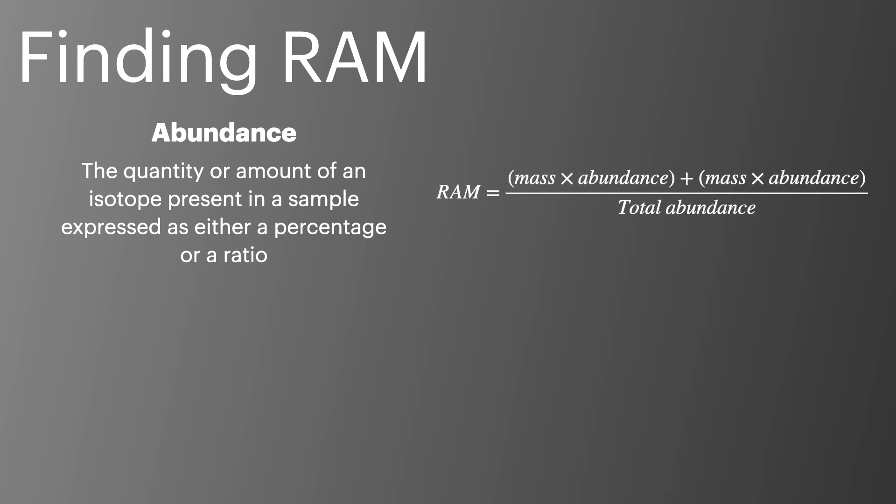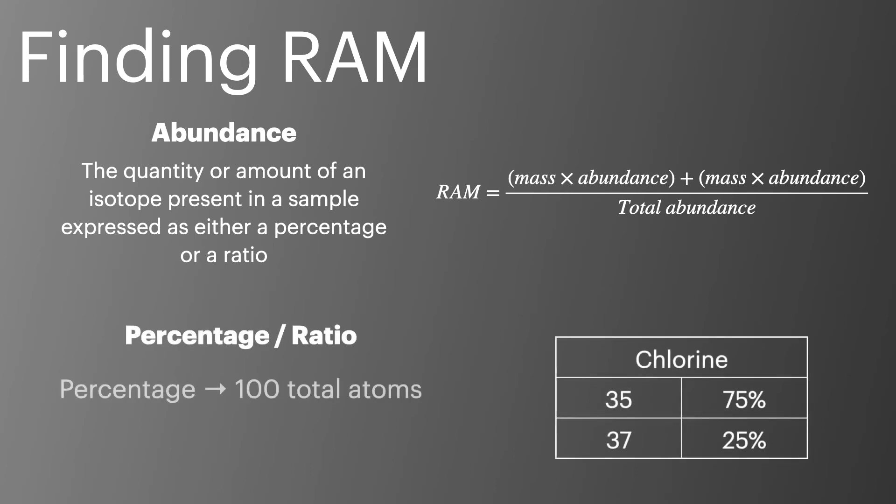We can then use this equation to calculate the relative atomic mass. The top line of this equation could be expanded, adding in more masses if there are more isotopes. If the abundance is given as a percentage, then the total number of atoms will be 100. However, if they are given as a ratio, you need to add up the abundances for each isotope to reach a total. This is an easy one to miss in an exam.